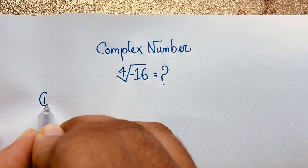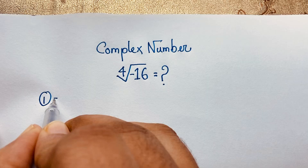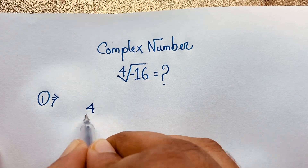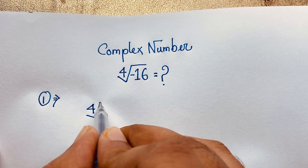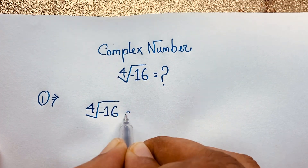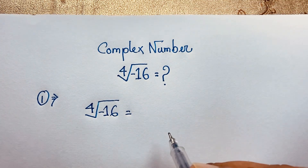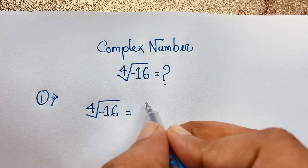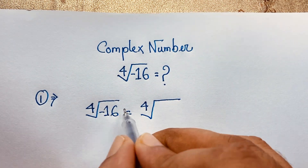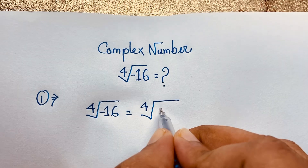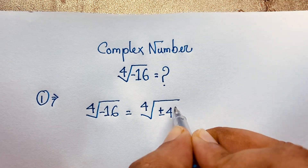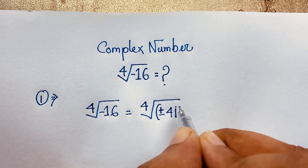This is our first method. Our question is 4th root of minus 16. You can see it will be 4th root, and this minus 16 will be plus or minus 4i bracket, power 2.